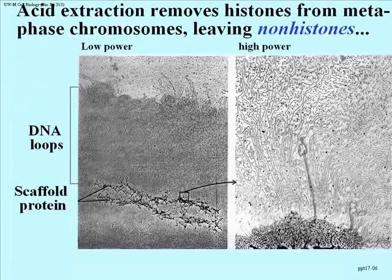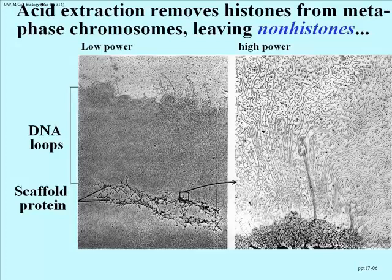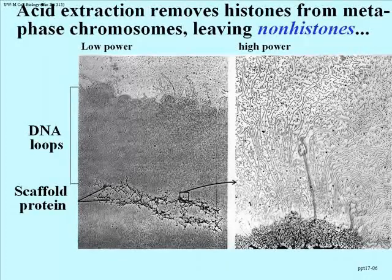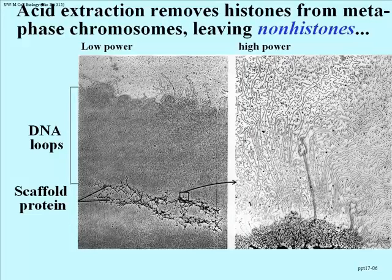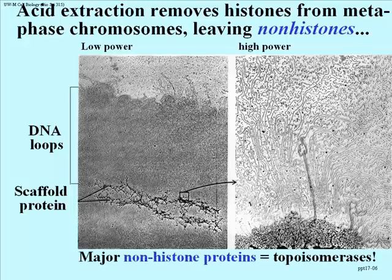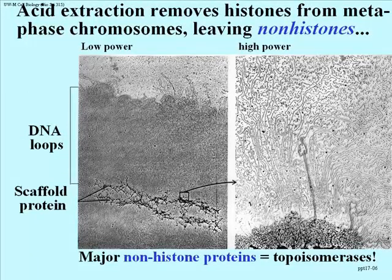I said earlier I would show you the looped domains of DNA. This is an extract of chromatin showing loops and some portion of the scaffold proteins at the center of these loops — those are the looped domains. Interestingly, the proteins in the scaffold are non-histones, and quantitatively a major component turn out to be topoisomerases. This suggests there are many topoisomerases in the scaffold in sufficient quantity to relieve supercoiling during replication of eukaryotic DNA during the S phase of the cell cycle.